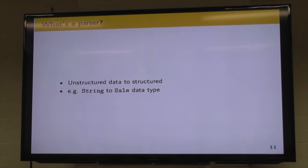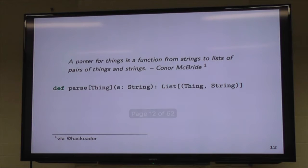What is a parser? In a simple sense, it's something that takes unstructured data and makes it structured. So a simple example would be taking a string maybe from a CSV file or something and turning that into a sale data type or some data type that we know how it works. We have confidence that it's valid and our programs can use it. And for those who weren't fortunate enough to see Connor at Lambda Jam, he defines a parser as a parser for things is a function from strings to lists of pairs of things and strings.